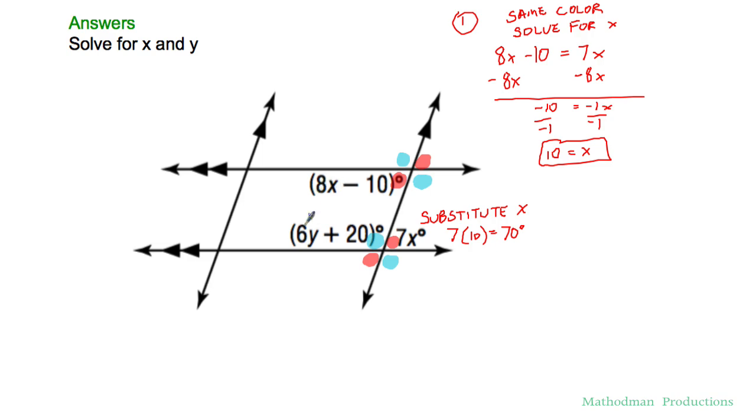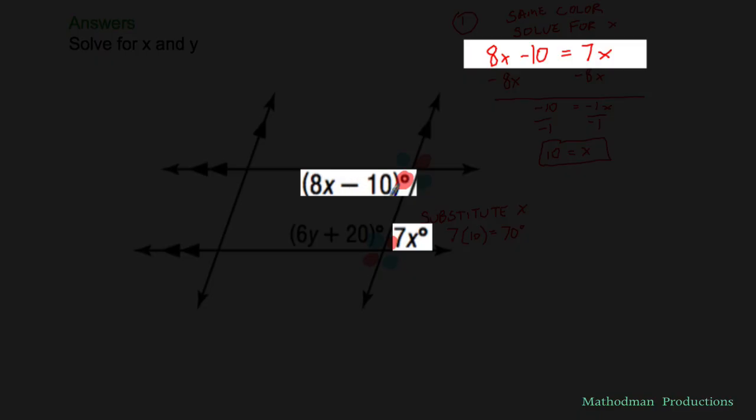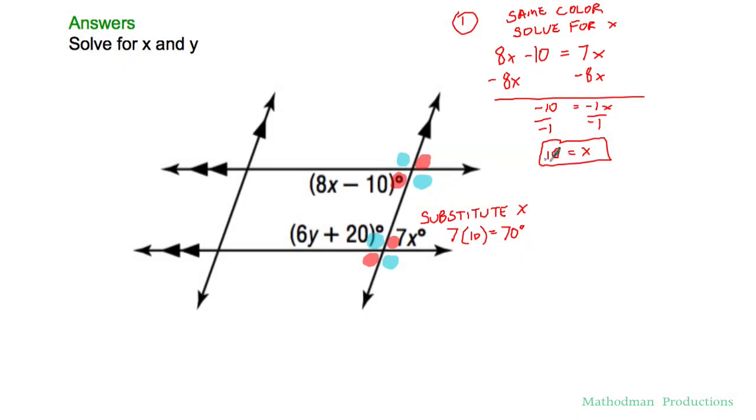I can't set up an equation for y because it's by itself. There's nothing else to compare y with so the first step is to solve for x. Since these two expressions have the same color, they're both red, I can set them equal to each other to solve for x. 8x minus 10 equals 7x. Solve away and you get x equals 10.